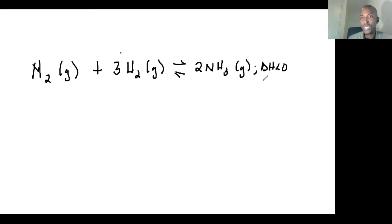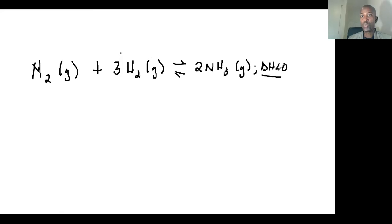This is very important. When delta H is less than zero, the forward reaction is exothermic and the backward reaction is endothermic. Delta H is the enthalpy of reaction, or heat of reaction. When it's negative, the forward reaction is exothermic while the backward reaction is endothermic.